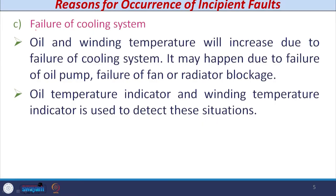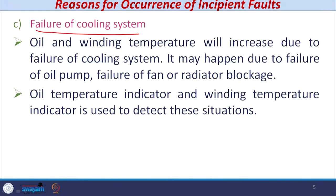We need to carry out regular cleaning of the silica gel and change it if required. The third reason for incipient faults is failure of the cooling system. Power transformers are very large, and oil is normally used for cooling. Due to failure of the cooling system — caused by failure of an oil pump, failure of a fan, or blockage in the radiator — the oil and winding temperature will increase. To detect this abnormality, an oil temperature indicator and winding temperature indicator are used inside the transformer.